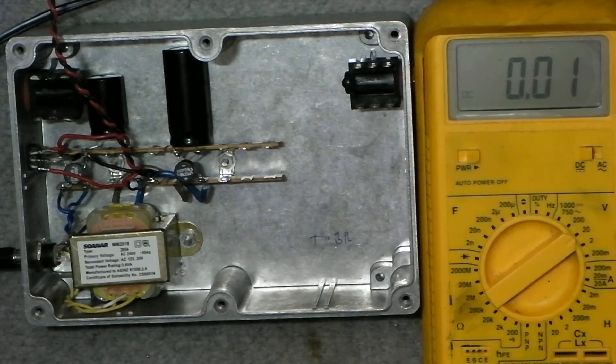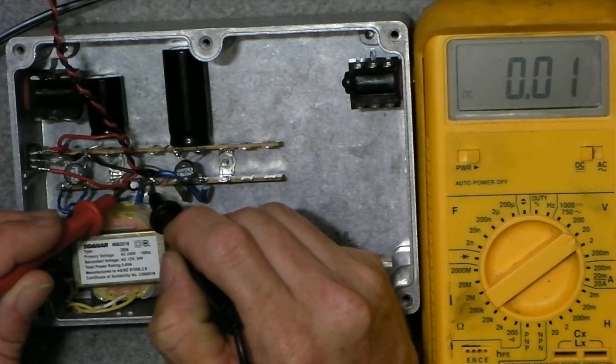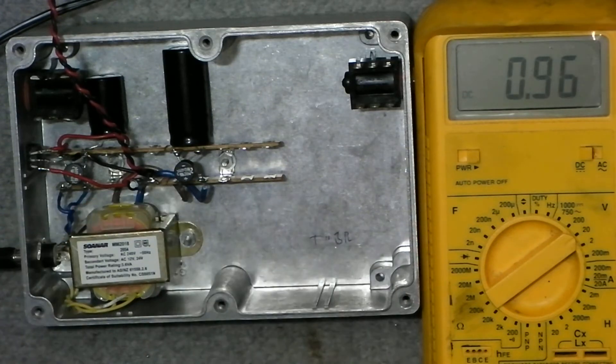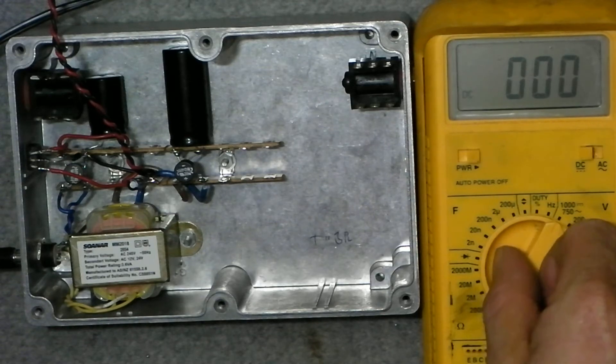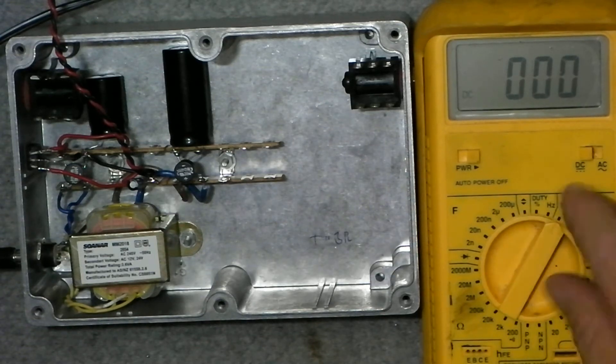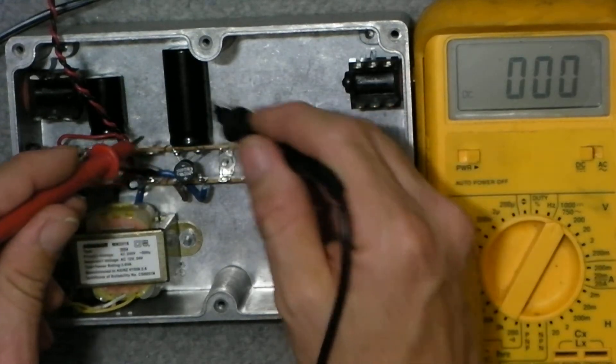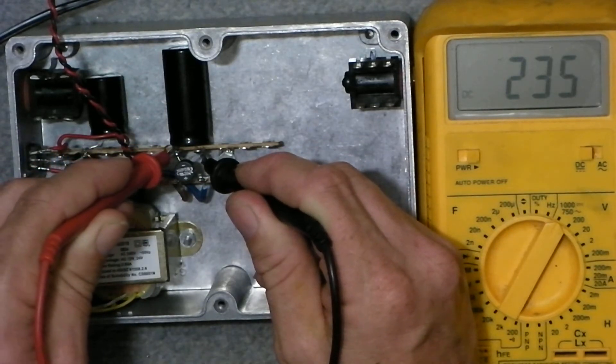So if we go down to 20 volt scale, we'll get a better example of what that is, 12.67. Now that we're on DC, we'll go to the 750 volt scale, and we'll check the voltage across this capacitor here, 235.